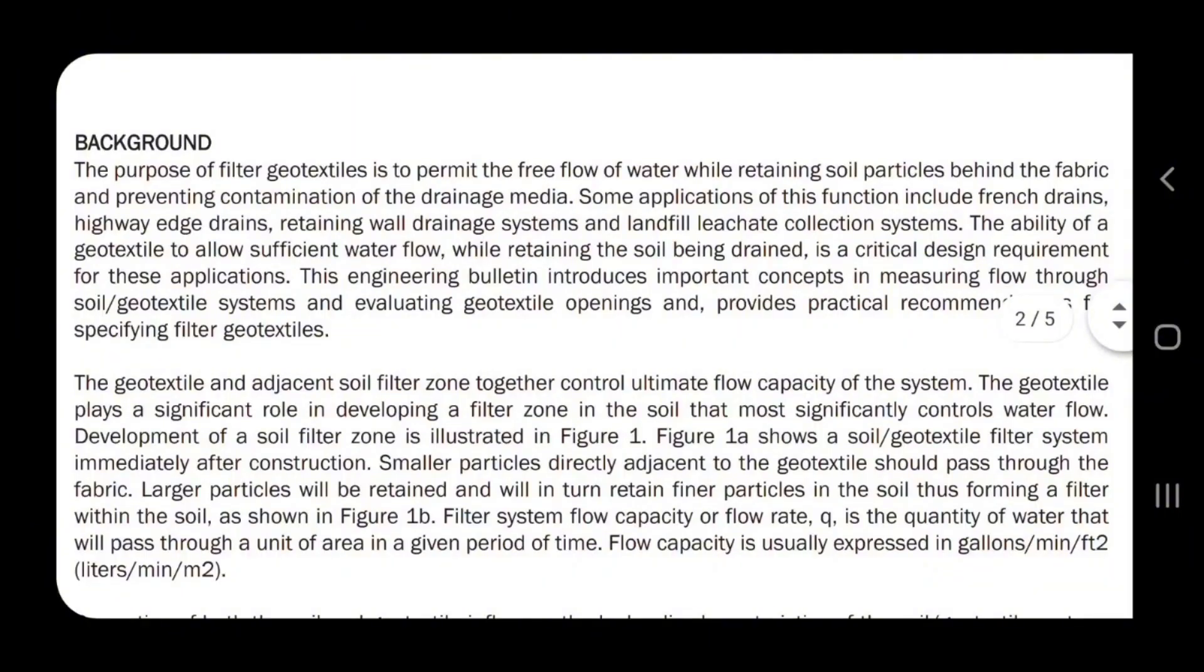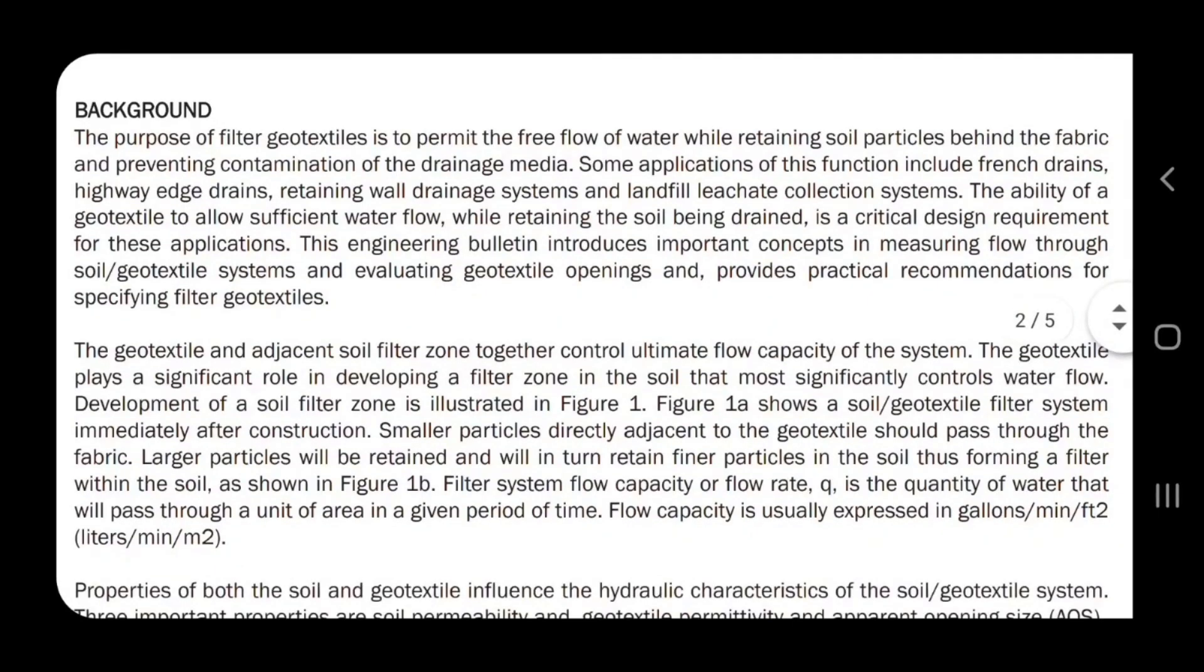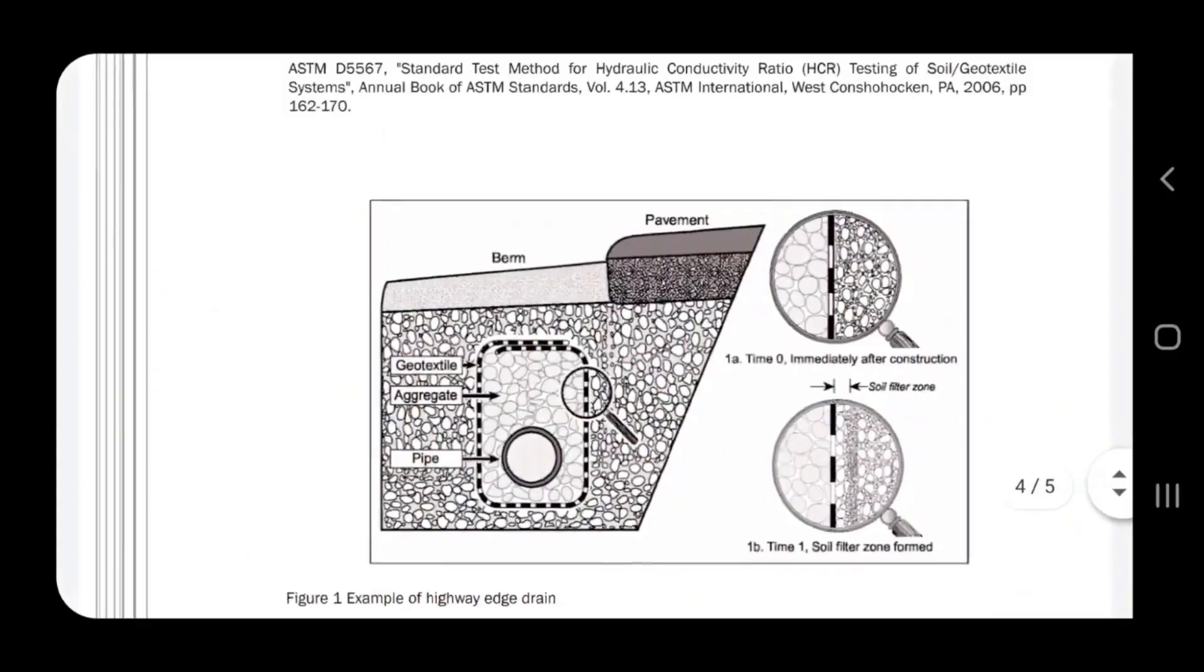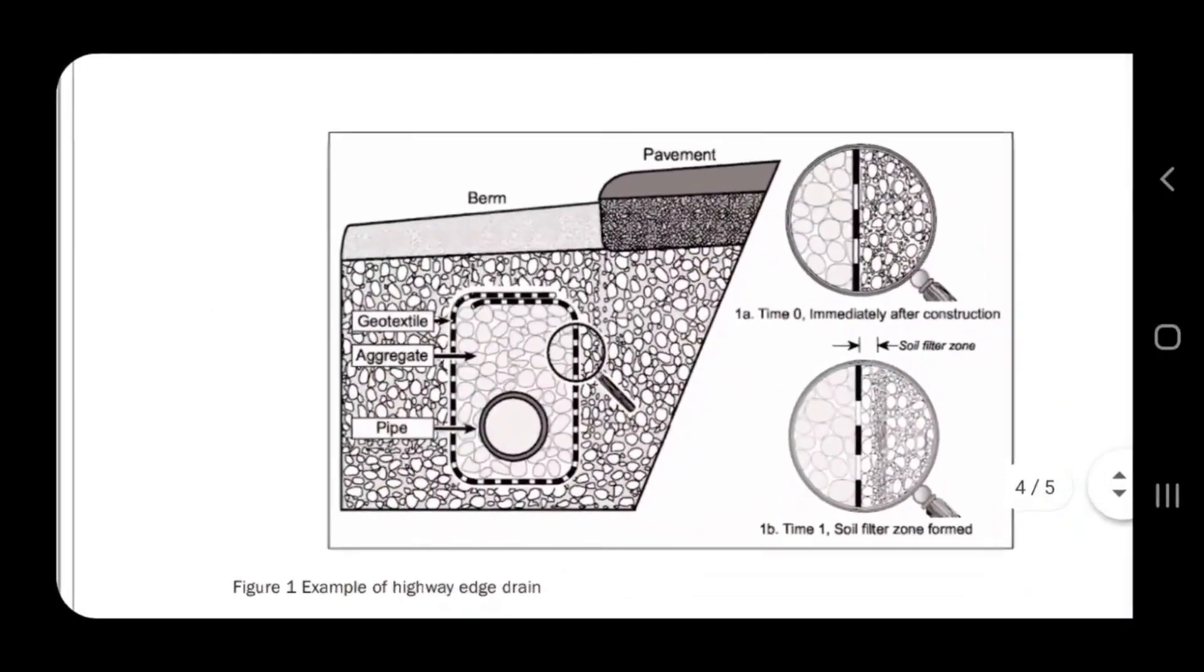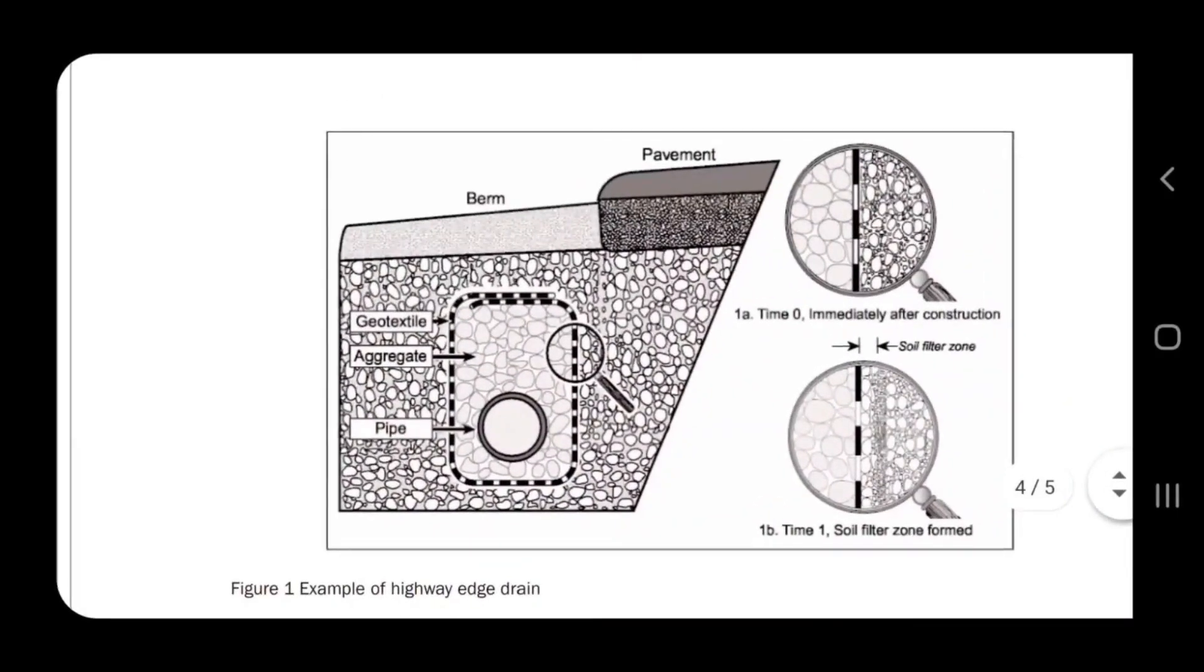There's a little diagram that I wanted to go over with you guys because it gives all the details to how this fabric works. This diagram was done for a road construction scenario - a highway edge drain. They show a pipe and a burrito wrap, and then they show all the native soil.